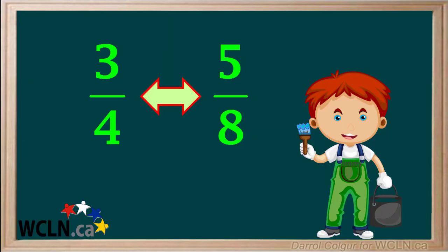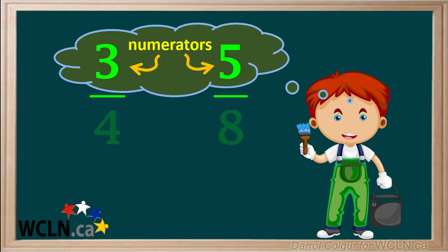The problem is, when Jimmy is considering the two fractions 3 quarters and 5 eighths, he's only thinking about the numerators and comparing those. The numerator 5 is larger than the numerator 3, but does that make the fraction 5 eighths larger than the fraction 3 quarters?